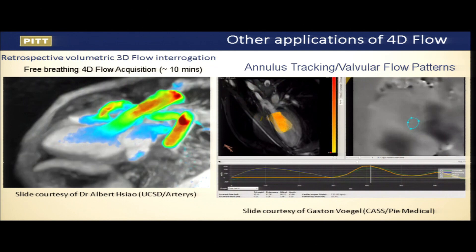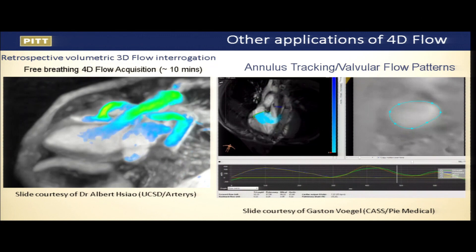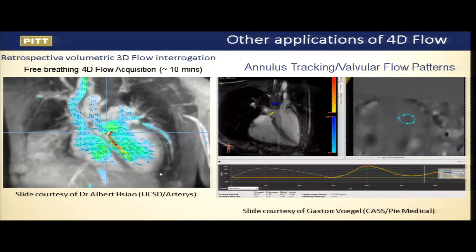On the right panel is CAAS by Pi Medical from the Netherlands, which we are working with for 4D flow and annulus tracking — particularly for valvular heart disease, tracking annular displacement and motion throughout the cardiac cycle and measuring flow at any given plane.